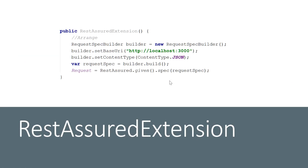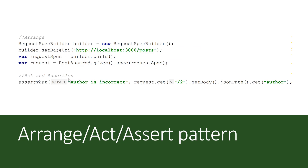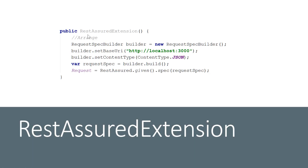We are going to create something called RestAssuredExtension within our code, which will have a constructor containing the same arrange logic we just saw. We'll add additional options like content type and return the specification within a request variable. This lets us dissect our code into a more granular level, extending it as methods and liberating the power of REST Assured's non-BDD style within Cucumber's BDD step definitions.